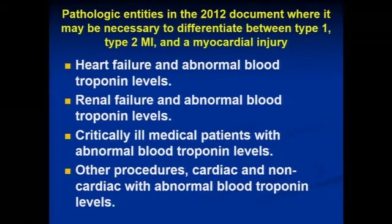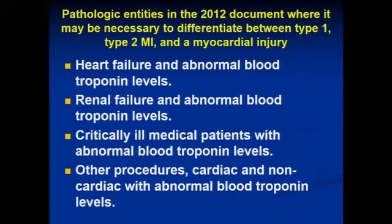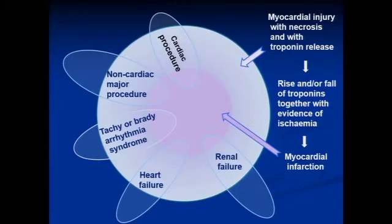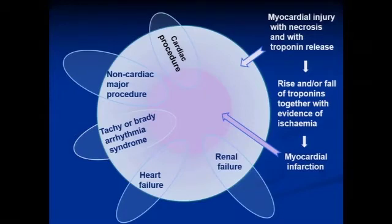There are various entities where you can see ongoing injury but no delta: heart failure, renal failure, critically ill medical patients with non-ischemic events, and procedures such as ablation in the EP lab, which will also produce elevated troponin. The diagram illustrates this: the pink area in the middle represents true myocardial infarction with troponin elevation and clinical criteria; the white area is Type 2 with elevated troponin and necrosis due to supply-demand change; and where the circles fall outside, there's no troponin elevation — patients with no injury at all.